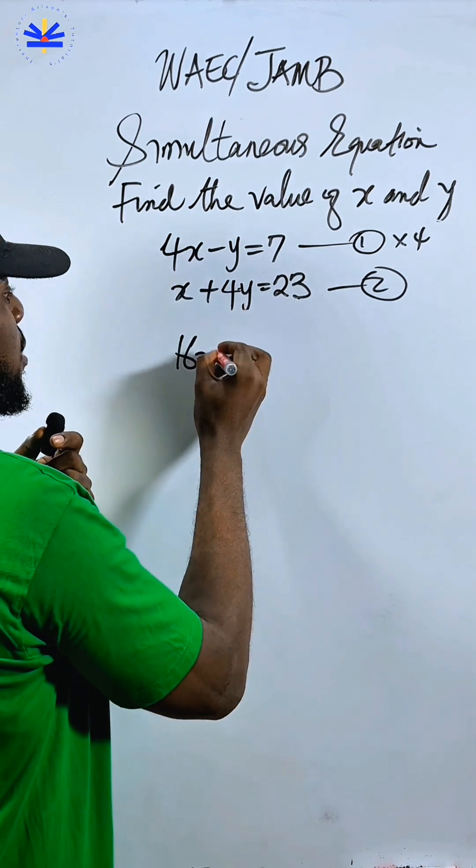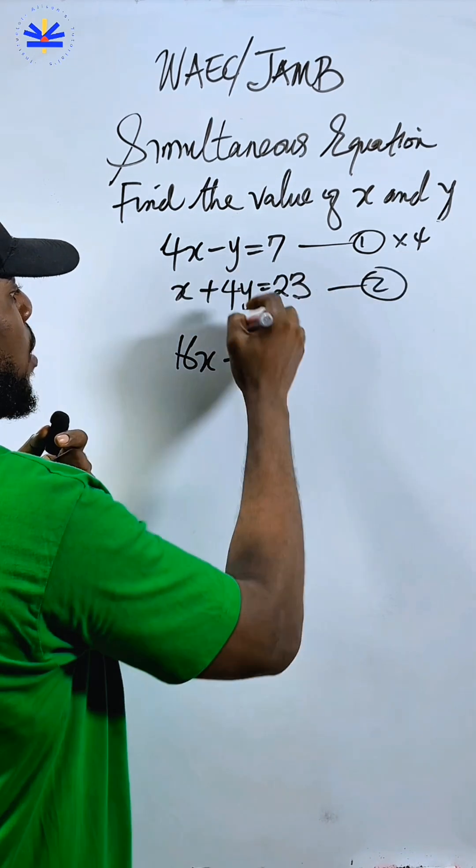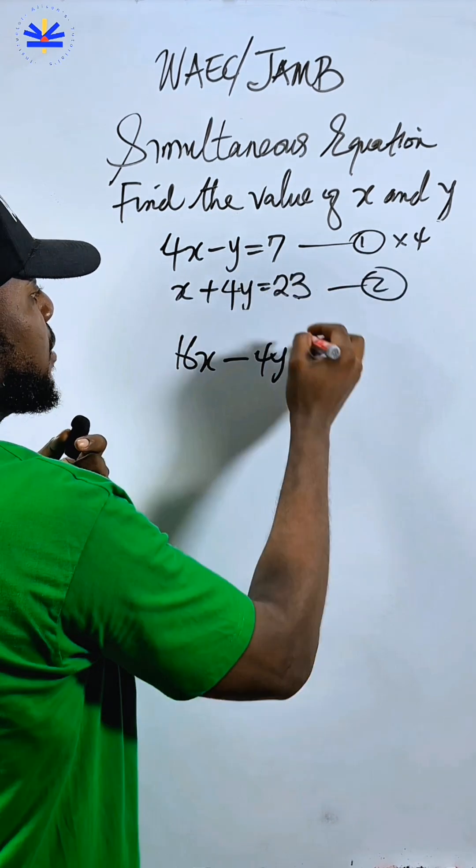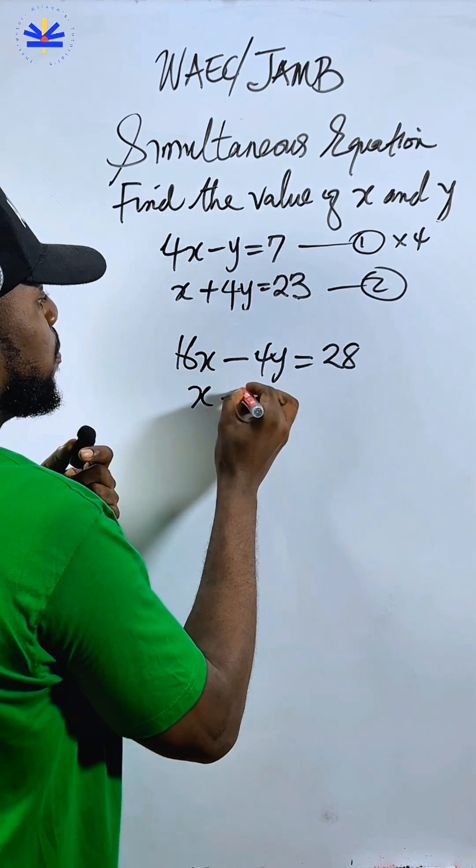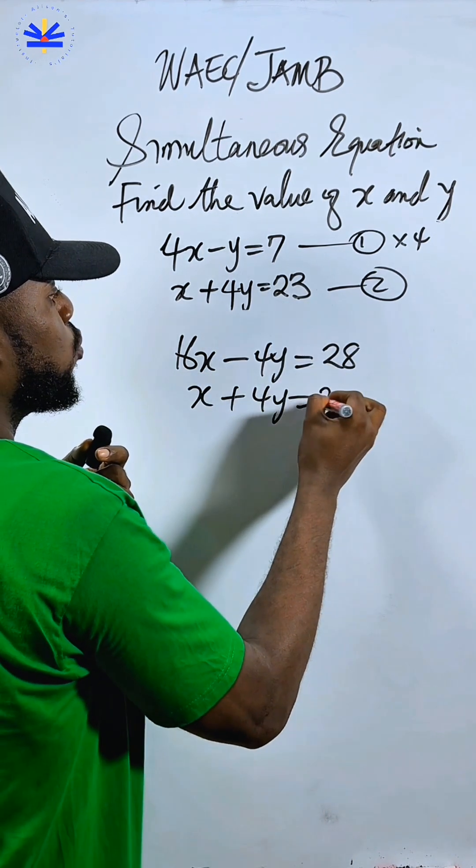Four times 4x, 16x, minus four times y, 4y. Four times seven, you know it's 28, that would be. Repeat this particular one. X plus 4y equal to 23. You understand?